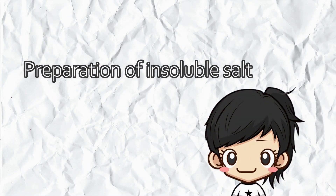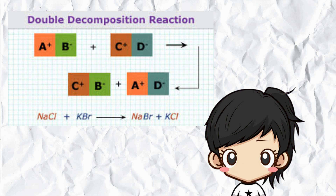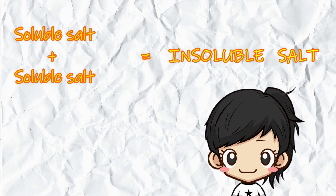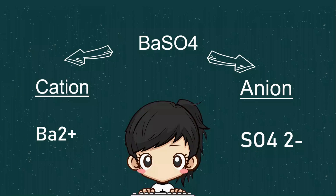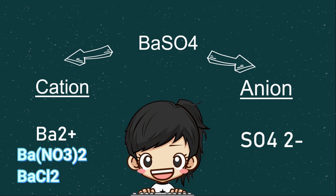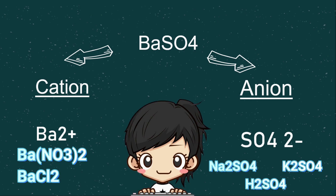Now I'm going to tell you how insoluble salts are prepared. Insoluble salts are prepared by the double decomposition reaction. A double decomposition reaction is a reaction involving ion exchange to produce insoluble salts, which is called a precipitate. The reaction involves a mixture of two soluble salt solutions to produce an insoluble salt. For example, the preparation of insoluble barium sulfate: for the cation, we choose barium from a solution of a soluble salt such as barium nitrate or barium chloride. For the anion, we choose sulfate ion from a solution of a soluble salt such as sodium sulfate, potassium sulfate, or sulfuric acid.